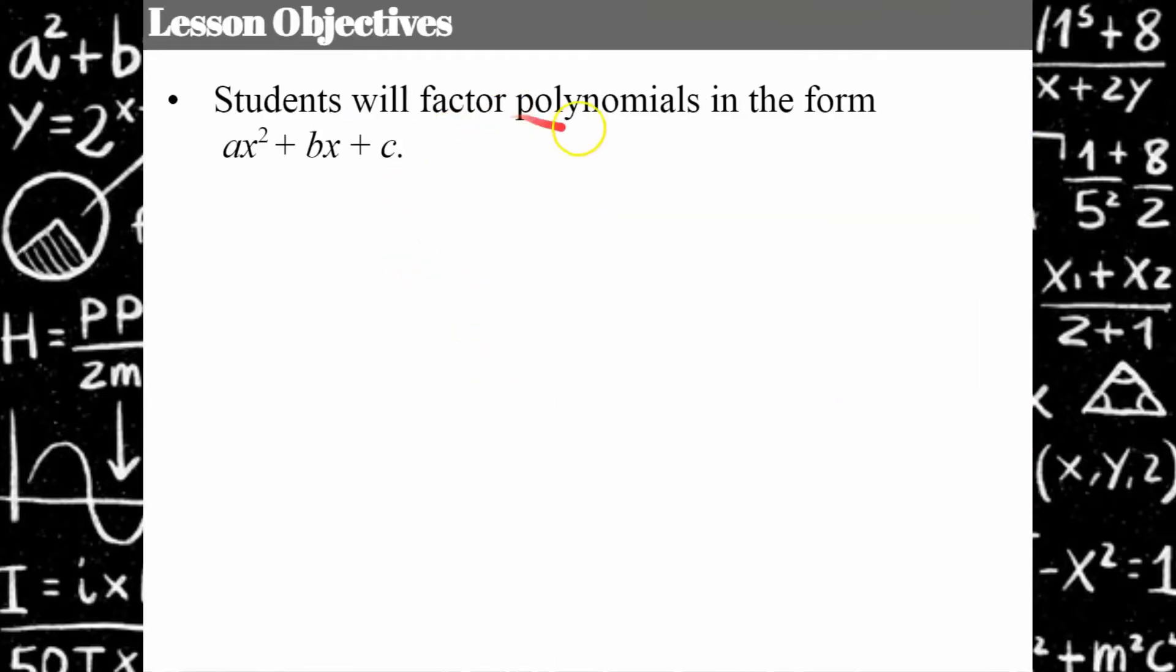Today we're going to factor polynomials in the form ax² + bx + c. This is the second video in my playlist dealing with factoring. Before I showed you how to do it by factoring by grouping, which had six steps involved. If you're interested in seeing something other than a table, that would be a great place to start.